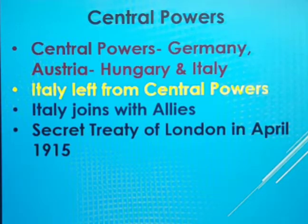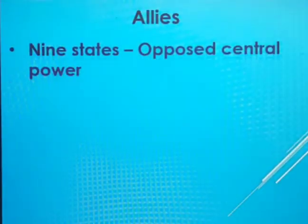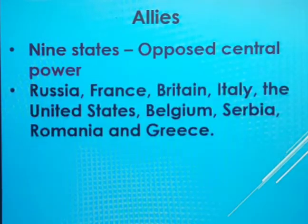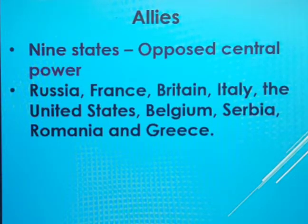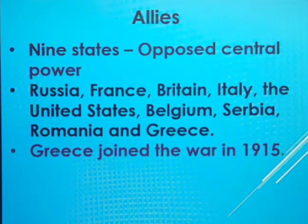By this treaty, Italy agreed to enter the war against the central powers. Now we shall see the Allies. There were nine states opposed to central powers. These nine states are Russia, France, Britain, Italy, the United States, Belgium, Serbia, Romania, and Greece.